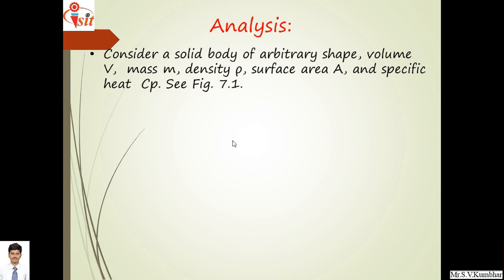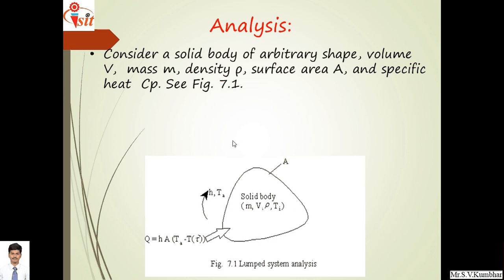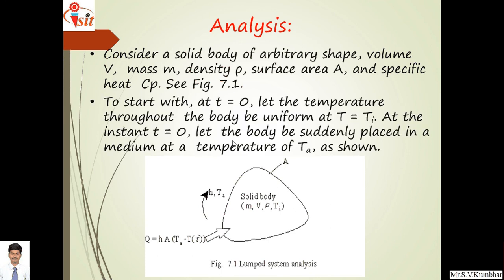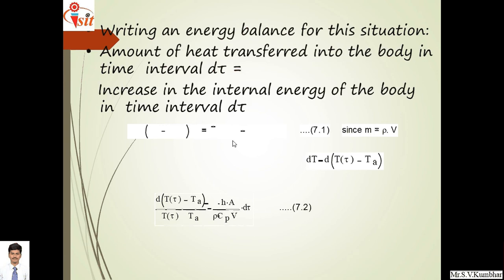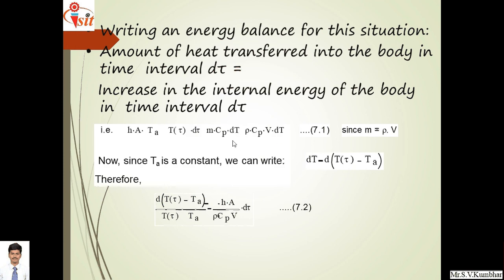In the analysis, consider a solid body. At time t = 0, let the temperature of this solid body throughout be uniform — that is the initial temperature Ti at the instant t = 0. The body may be air-quenched or liquid-quenched. Writing an energy balance equation: the amount of heat transferred into the body in time interval dτ equals the increase in internal energy of the body in time dτ. This gives: h·A·(T(τ) − Ta)·dτ = m·cp·dT = ρ·cp·V·dT, where m is replaced by density times volume.